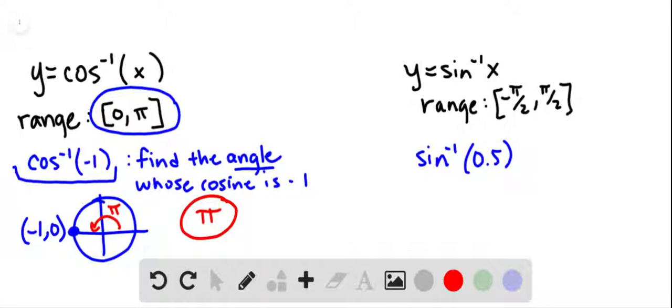Similarly, for the inverse sine of 1 half, when you see that phrase, you want to think to yourself, you're being asked to find the angle. Every time you're doing an inverse trig function, you're finding the angle whose sine is 1 half.